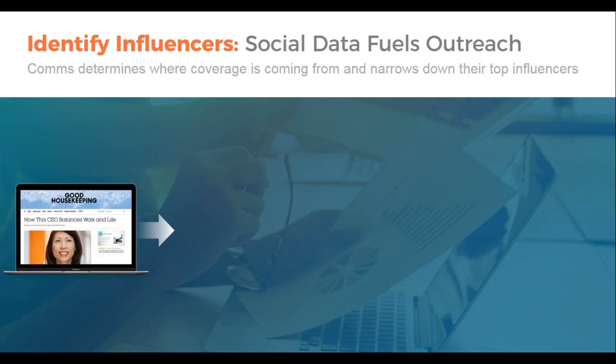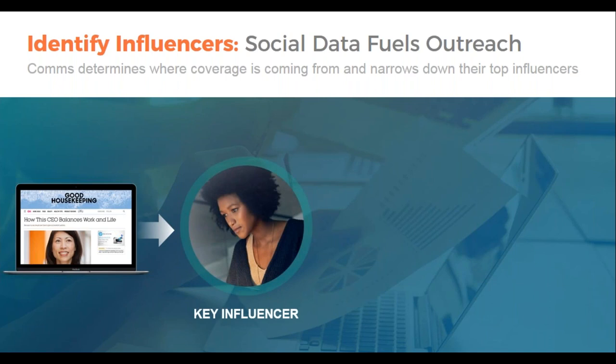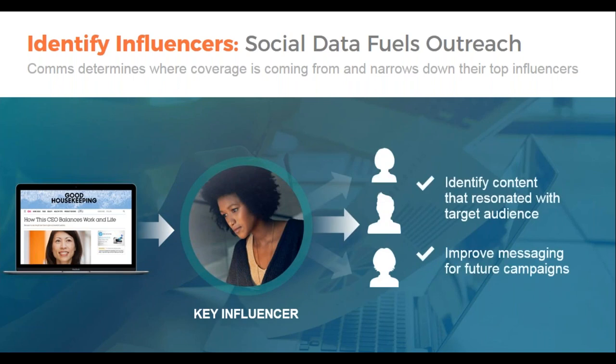To identify influencers in the new model, you start by looking at broad data points such as aggregate mentions, likes, comments, and followers across various social channels to understand engagement trends. Once you understand where your social coverage is coming from, you can determine which influencers are posting most frequently about your brand, competition, or products — and uncover down to the specific post what those influencers are actually saying. With this level of granularity, you'll be able to create more effective messaging and campaigns to resonate with the right influencers that will impact your target audiences.